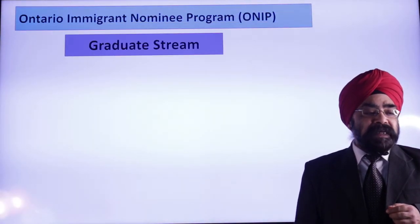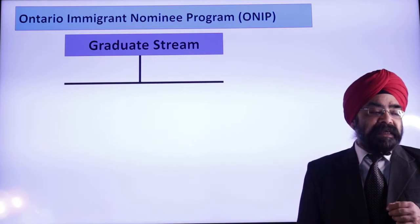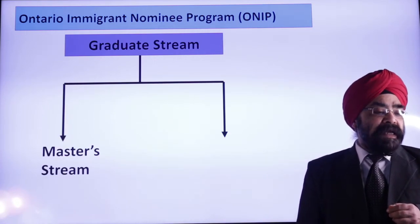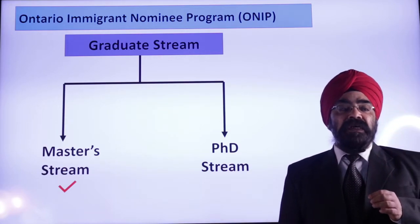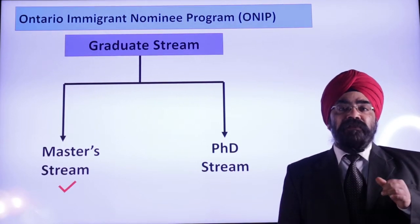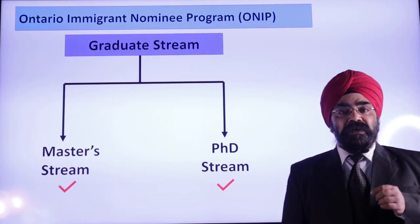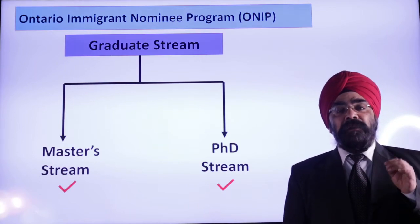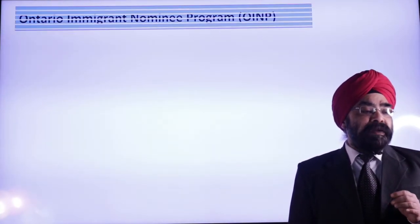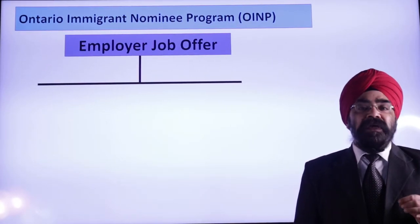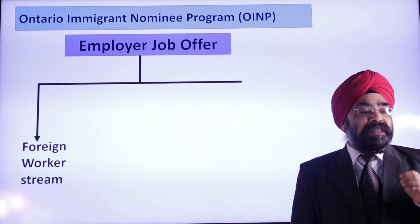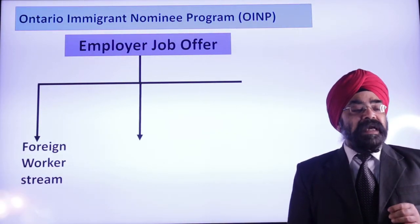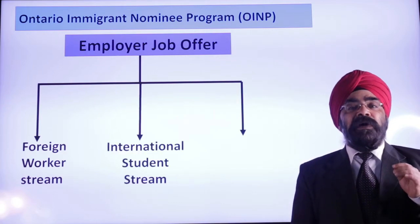Under Graduate Stream, Masters and PhD — two degrees are counted. Under the Employer Job Offer Stream, there are three sub-categories: the first is Foreign Worker Stream, the second is International Student Stream, and the third is In-Demand Skills Stream.